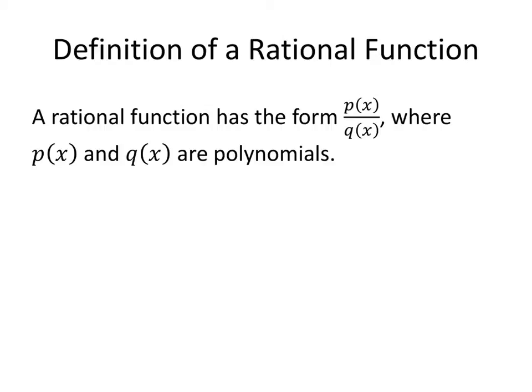Some examples of rational functions would look like this: 2x plus 3 divided by x squared minus 7. So again, the top and the bottom are polynomials, so that's a rational function.